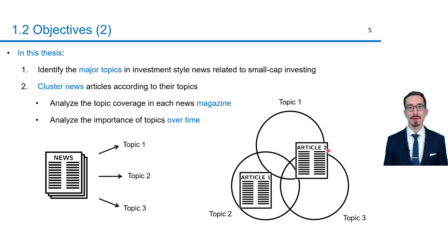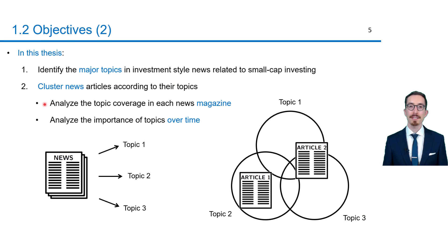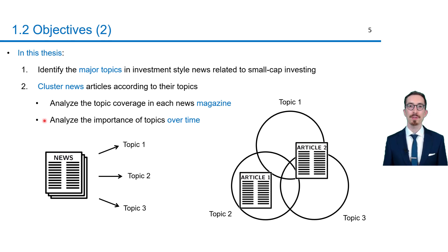For instance, we want to know whether article two is about topic one and topic three. Based on this clustering, it is then possible to analyze the topic coverage in each news magazine where these articles come from. Moreover, the importance of topics over time, measured by their frequency of occurrence, should be analyzed. This importance is precisely the missing ingredient in the previous regression model.